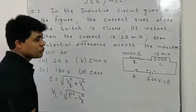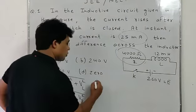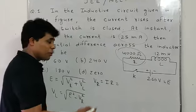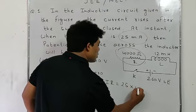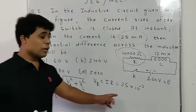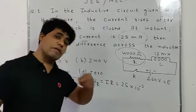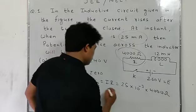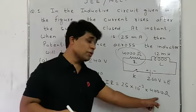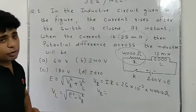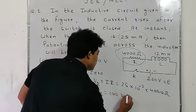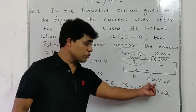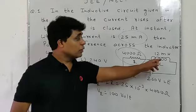Now we need to find VR, the potential across the resistance, using Ohm's law: V = IR. Current is given as 25 milliampere, so 25 × 10⁻³ ampere. Resistance is 4000 ohm. VR = 25 × 10⁻³ × 4000 = 100 volt.